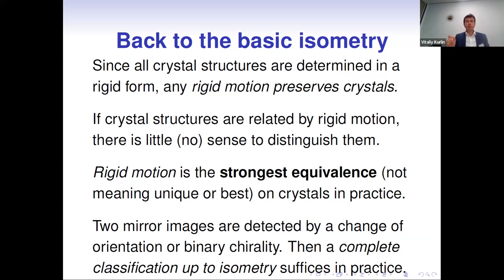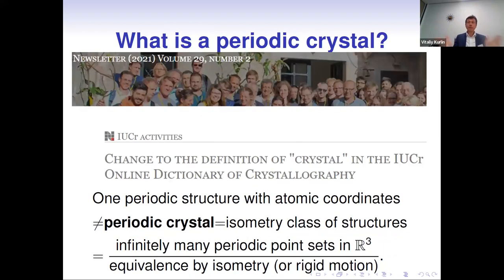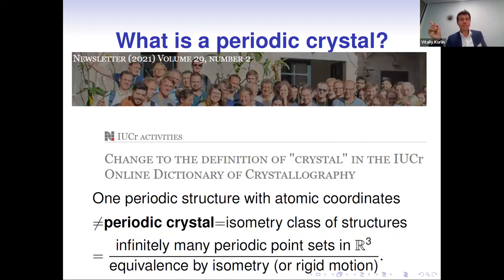Atoms vibrate and radiation damage produces slightly different atomic coordinates or unit cell parameters — that's why it's important to see them as slightly different, keeping rigid motion as the strongest equivalence. For simplicity, we will additionally include mirror reflections, so we talk about general isometries. We can easily detect mirror images by adding the sign of orientation.